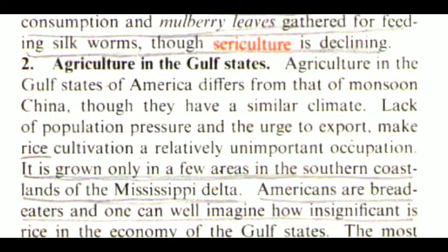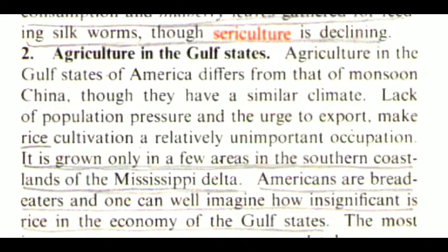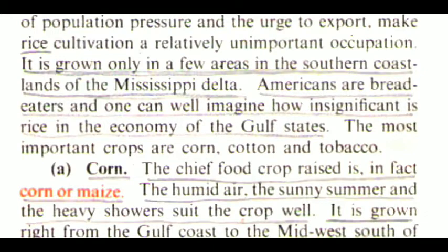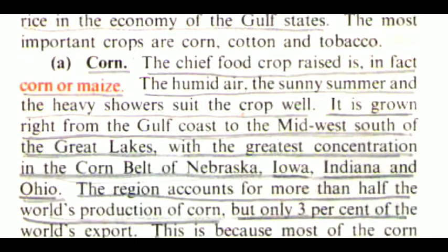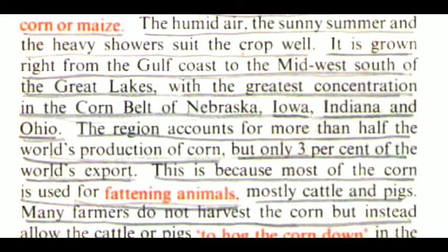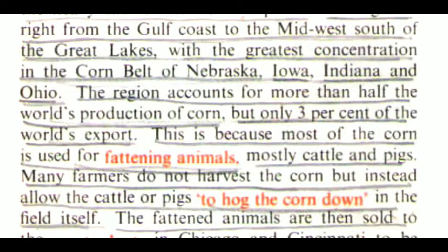Agriculture in the Gulf States of America differs from that of Monsoon China. Though they have a similar climate, lack of population pressure and the urge to export make rice cultivation a relatively unimportant occupation. It is grown only in a few areas in the southern coastlands of the Mississippi Delta. Americans are bread eaters and rice is insignificant in the economy of the Gulf States. The most important crops are corn, cotton and tobacco. The chief food crop raised is in fact corn or maize. The humid air, the sunny summer and the heavy showers suit the crop well. It is grown right from the Gulf Coast to the midwest south of the Great Lakes, with the greatest concentration in the Corn Belt of Nebraska, Iowa, Indiana and Ohio.